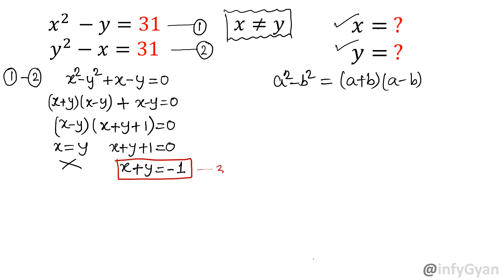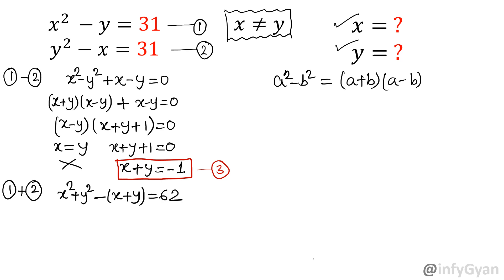This we will call equation 3. Now I am going to add both equations — consider equation 1 plus equation 2. So we get: x squared plus y squared minus x plus y equals 31 plus 31, which is 62. That gives x squared plus y squared minus (x plus y) equals 62. Now applying x plus y equals negative 1, we get x squared plus y squared minus (negative 1) equals 62, so x squared plus y squared equals 61.